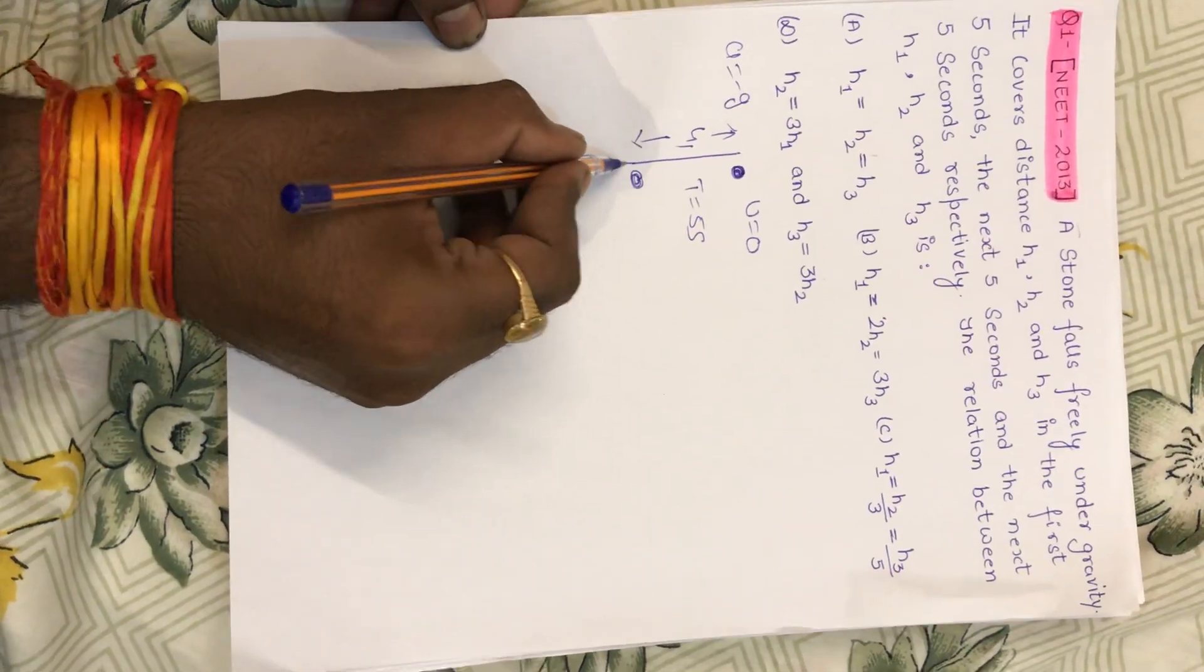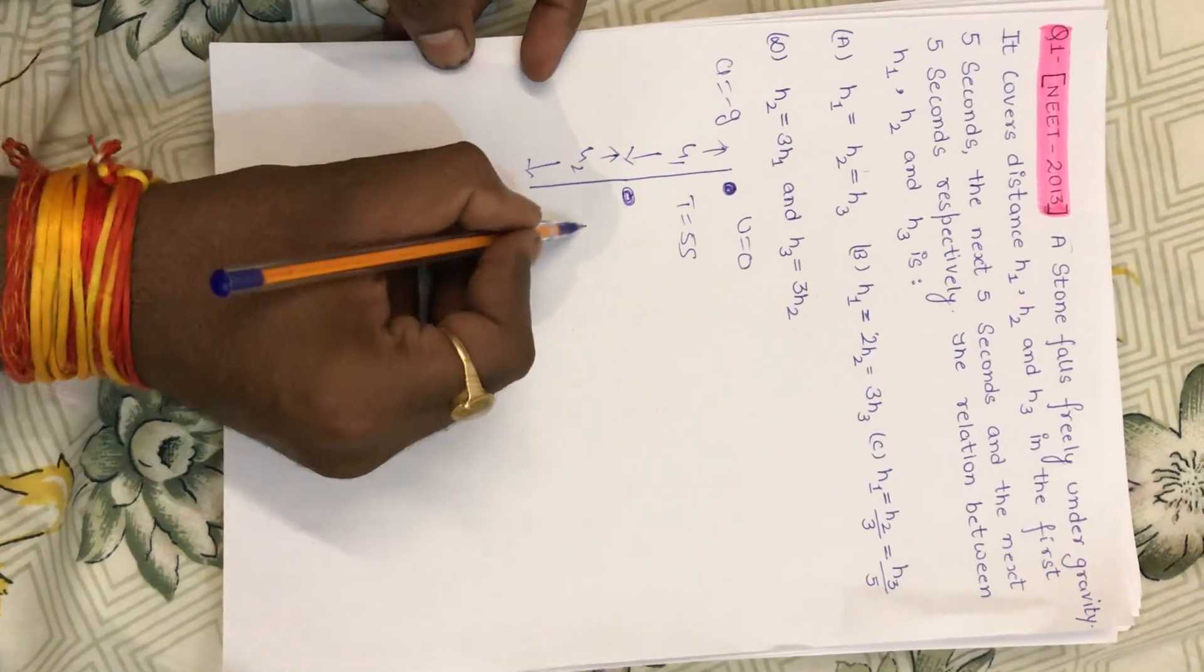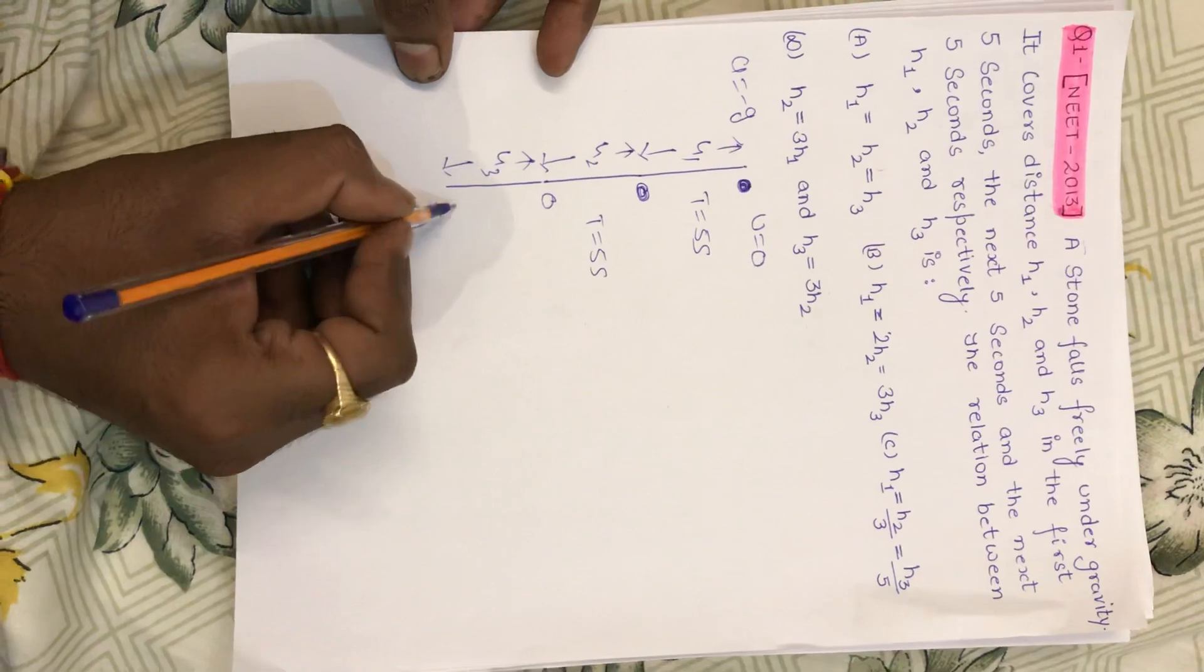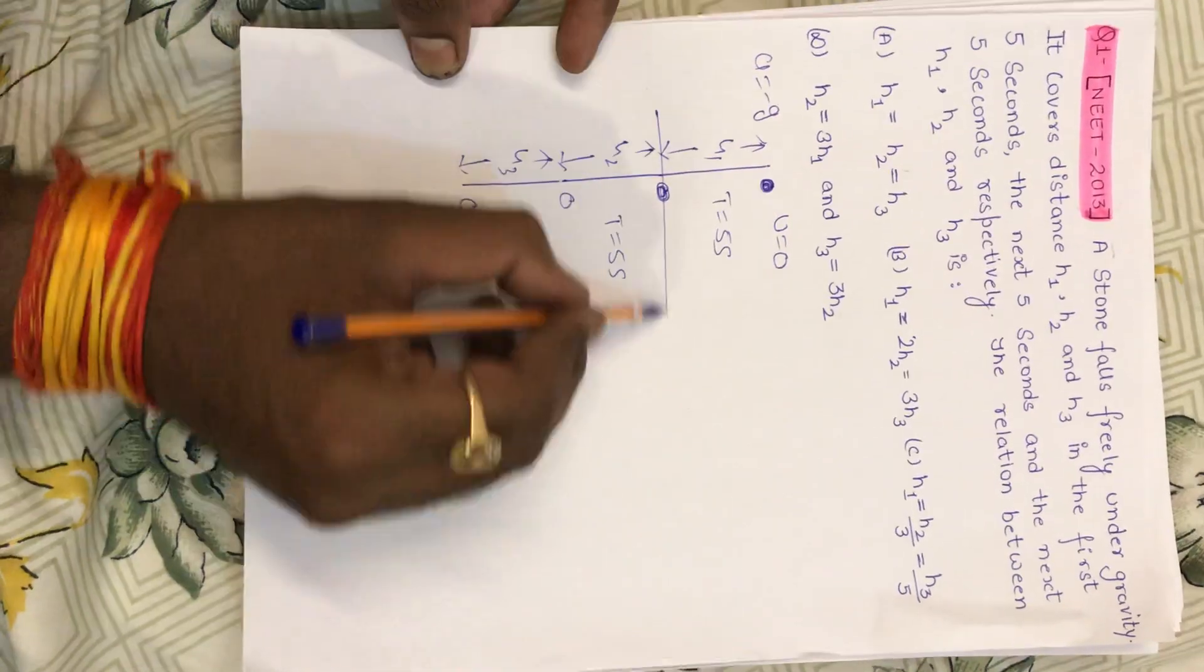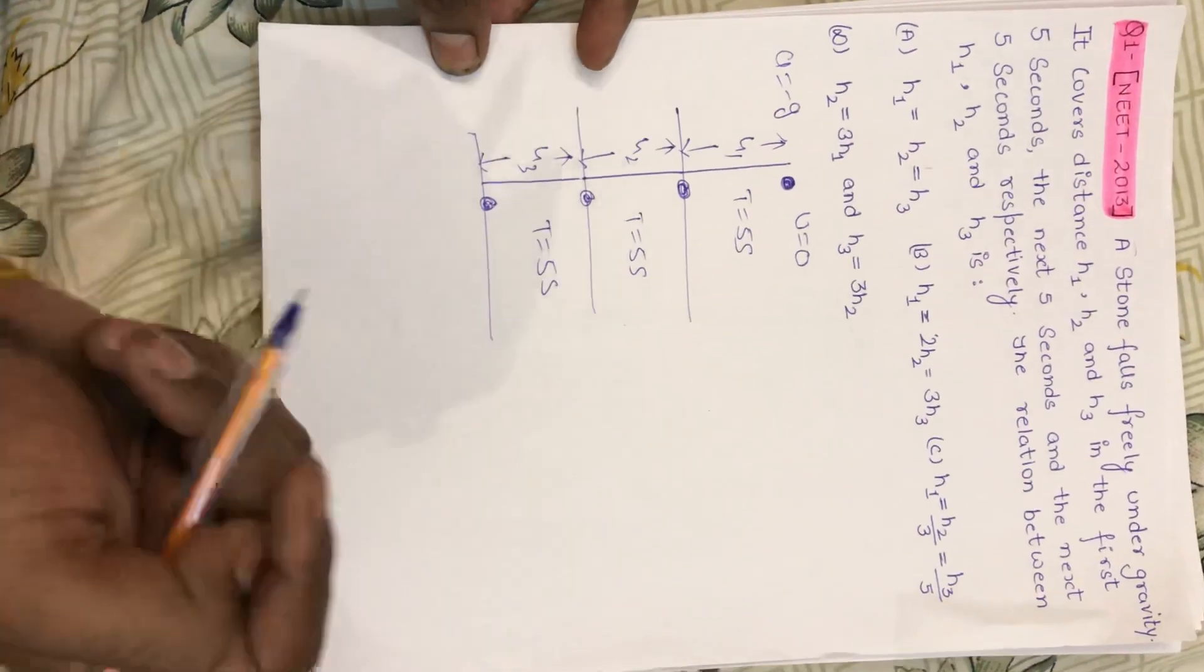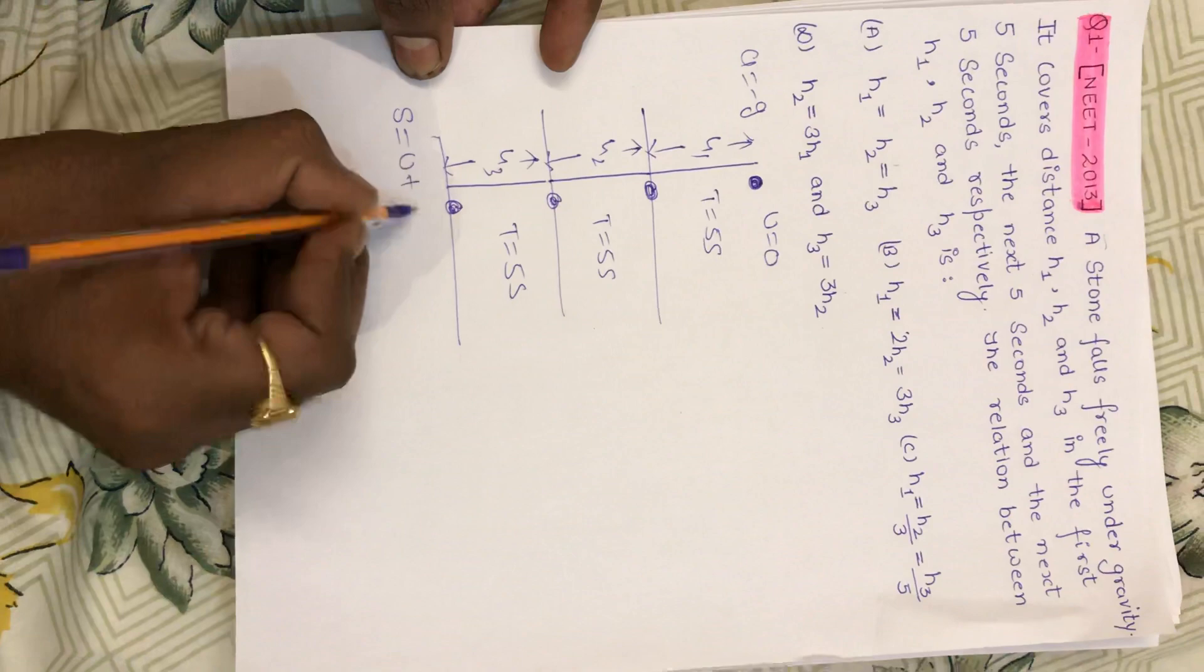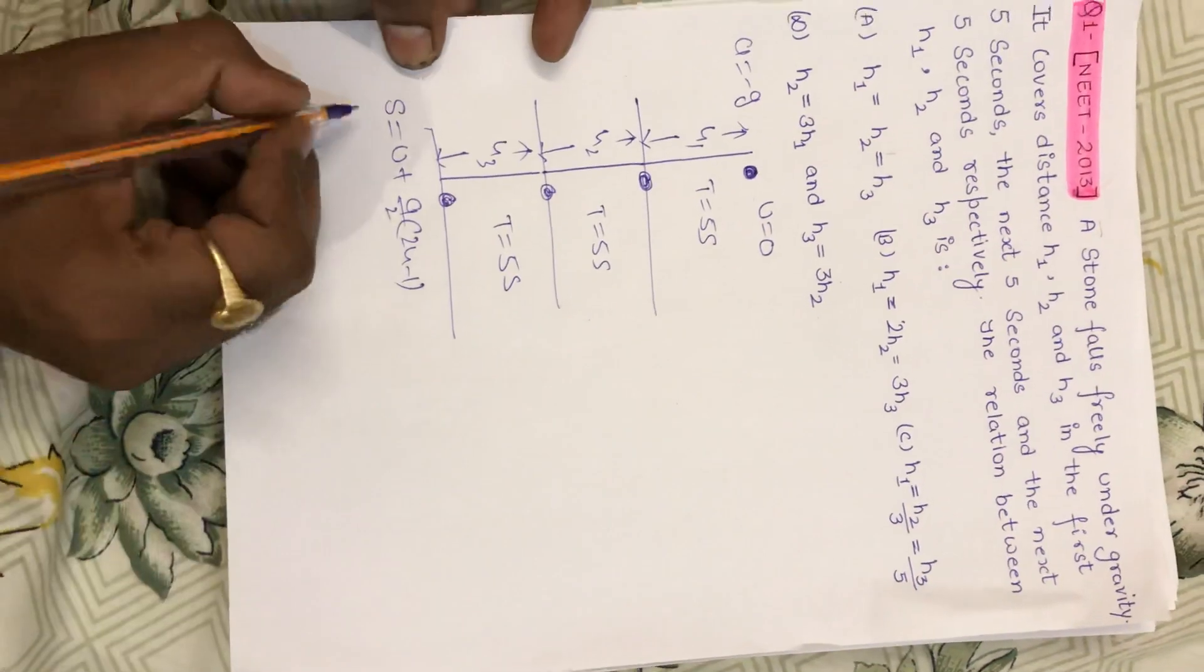The ball is here. The next h2 height is covering the next 5 seconds. If we see, this one is 5 seconds, this one is 5 seconds, and this one is 5 seconds.